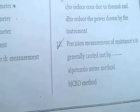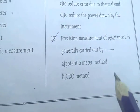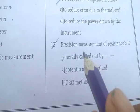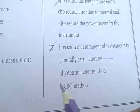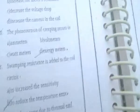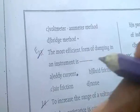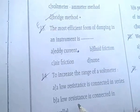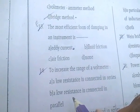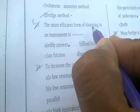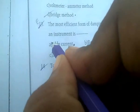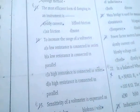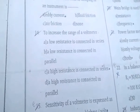Precision measurement of resistance is generally carried out by the bridge method — option D. The most efficient form of damping in an instrument is eddy current damping.